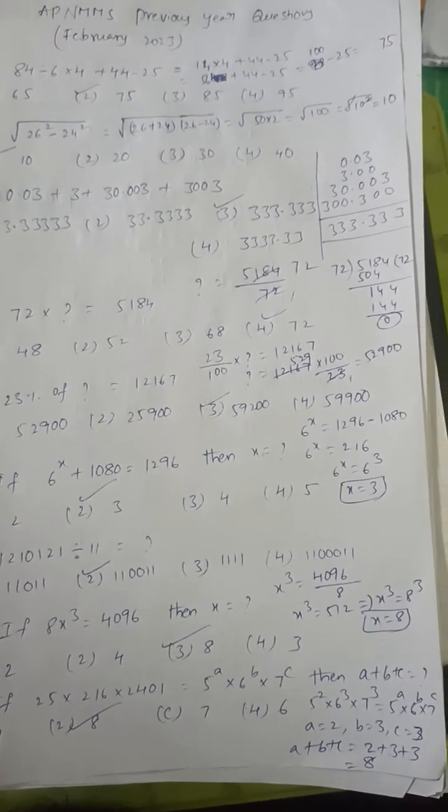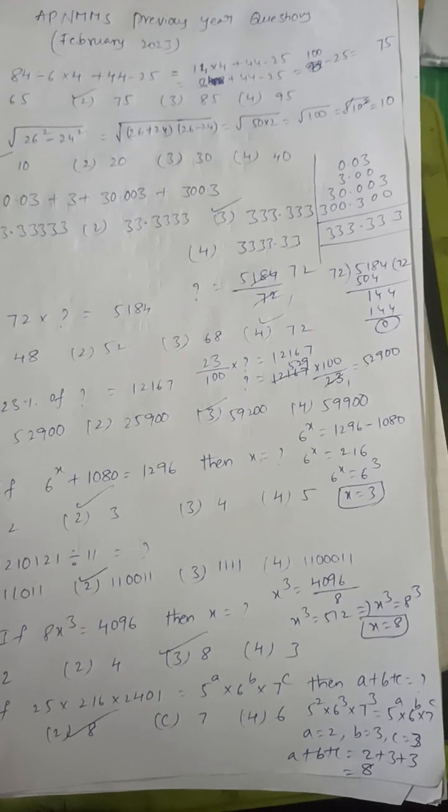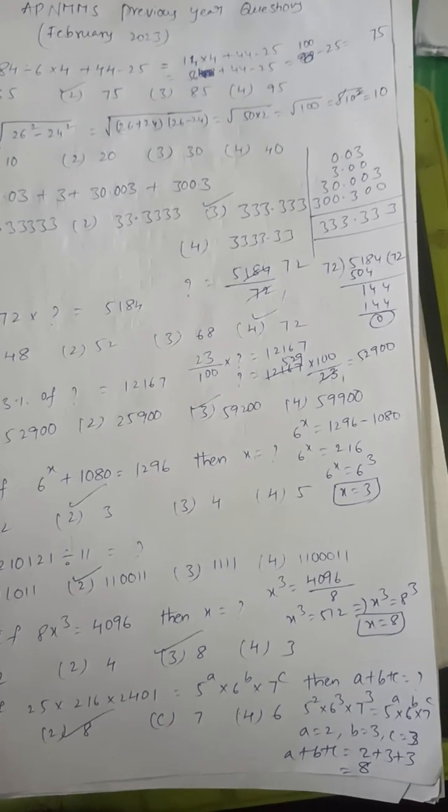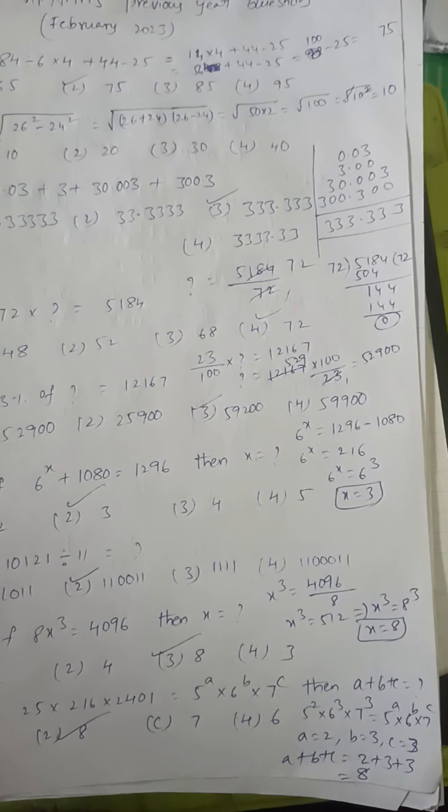Next: 25 into 216 into 2401. 25 can be written as 5 square, 216 as 6 cube, 2401 as 7 to the power 4.